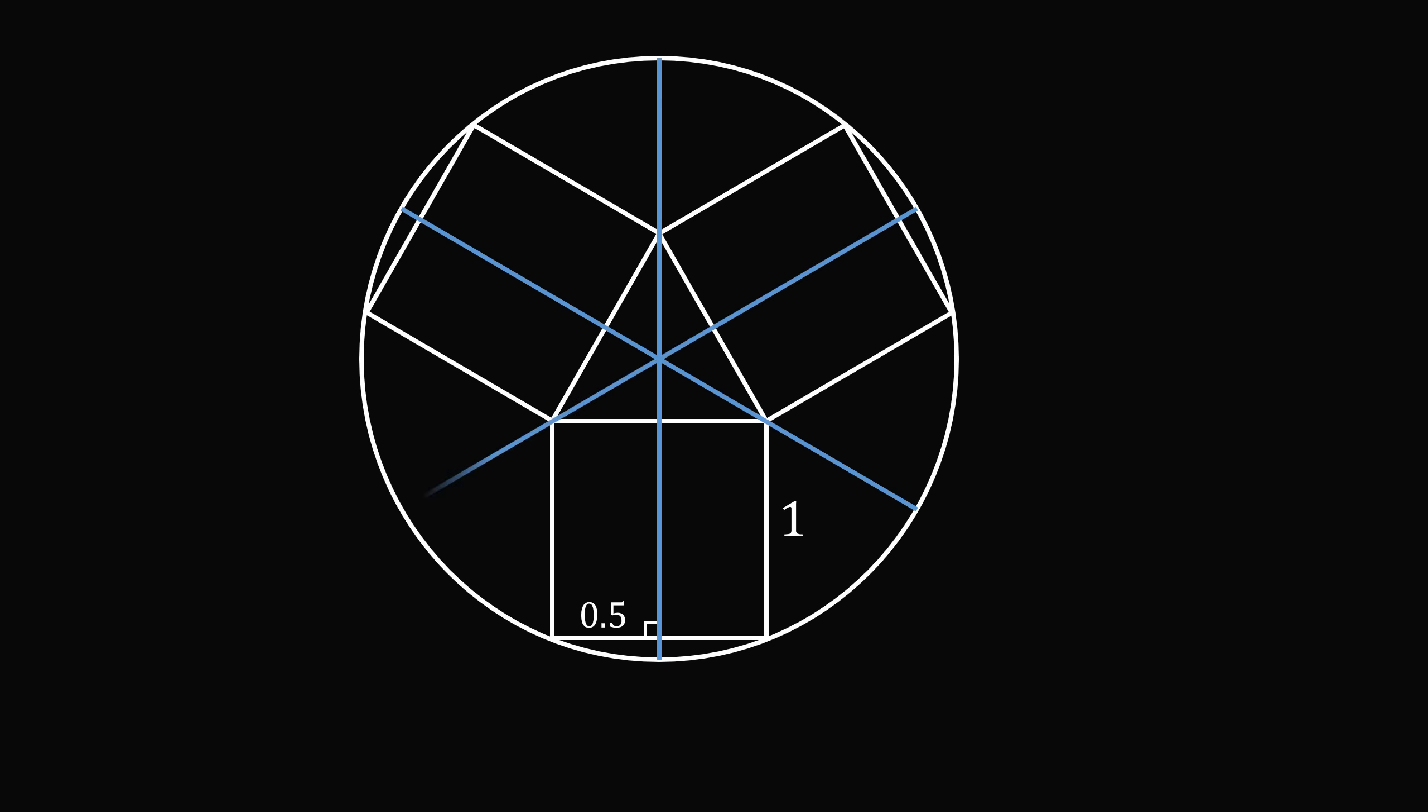Next, the perpendicular bisector of a chord of a circle will pass through the center of the circle. Therefore, the point where the three perpendicular bisectors intersect will be the center of the circle.